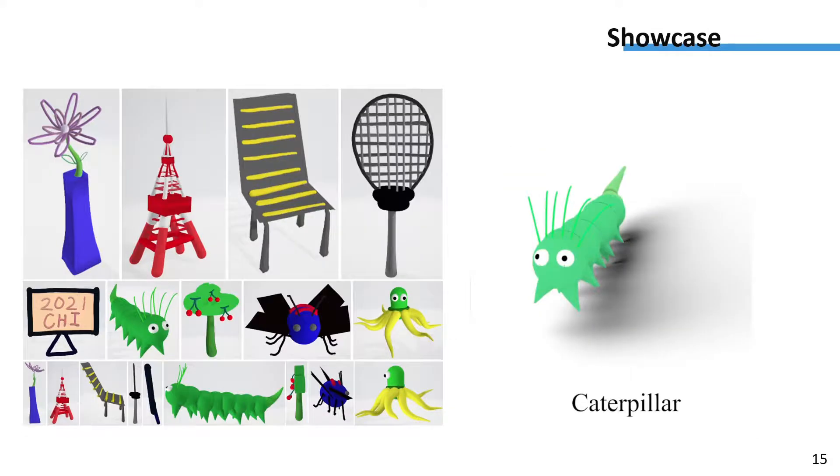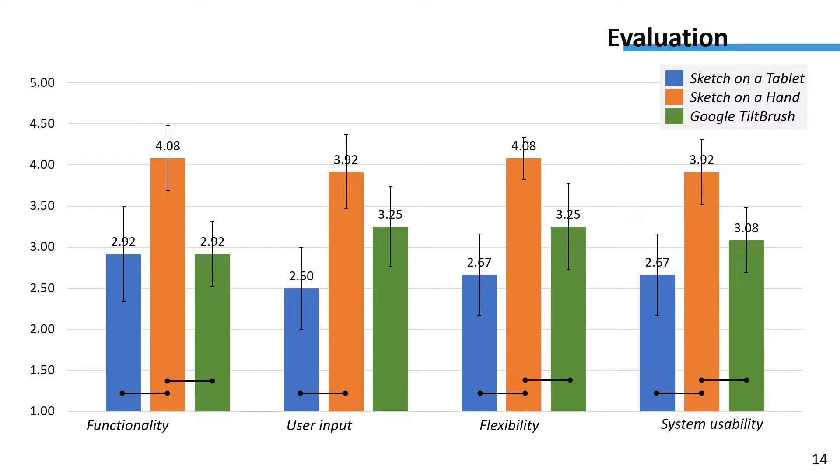Finally, we observed that sketching on a hand received higher scores than two other modes in functionality, flexibility, and system usability with significant differences.